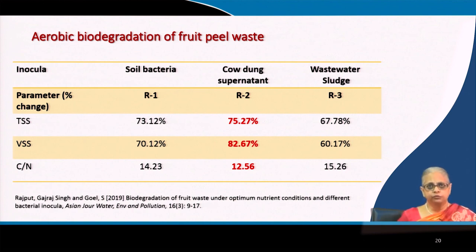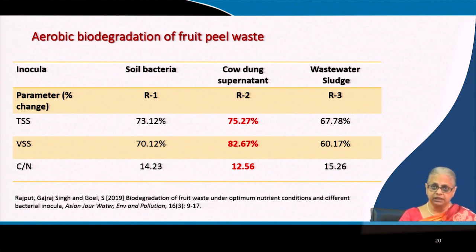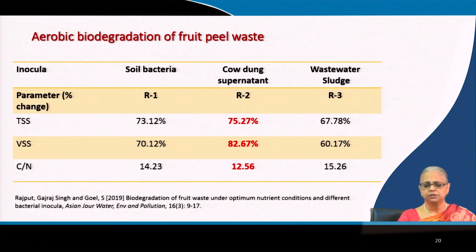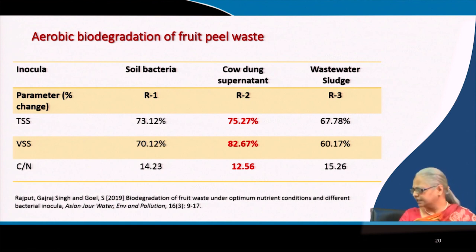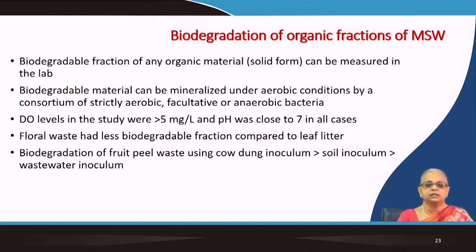With fruit peel waste, different inocula gave significantly different results. Soil bacteria gave 70% VSS removal; cow dung supernatant gave 83% VSS removal; wastewater sludge gave only 60% VSS removal, despite being expected to perform well. The key measurement was the biodegradable fraction expressed as change in VSS.